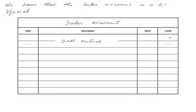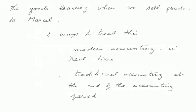On October the 20th, we record: sale cash to Marcel — credit 12,000. The actual description is simply 'cash'; it doesn't need to say it's a sale since we are on the sales account, and it doesn't really need to record that it's to Marcel because it's cash. As for the goods leaving when we sell to Marcel, there are two ways to handle that. Modern accounting does it in real time at the same time as the sales are recorded. Traditional accounting takes care of it at the end of the accounting period. For the time being, we shall follow the traditional accounting, so we shall take care of that later.